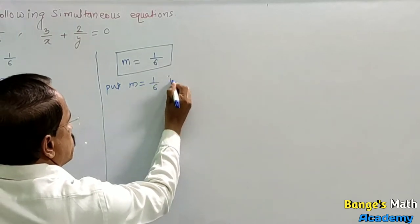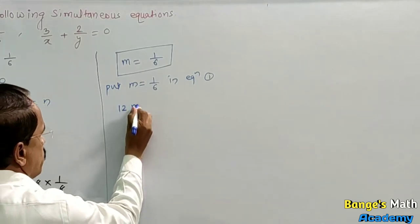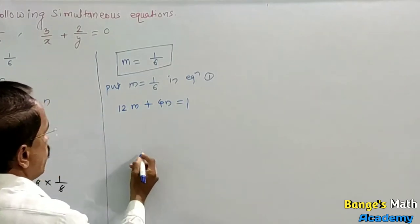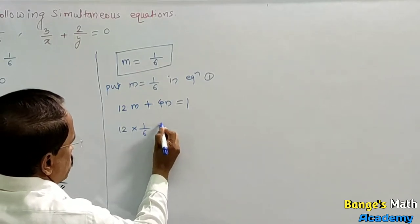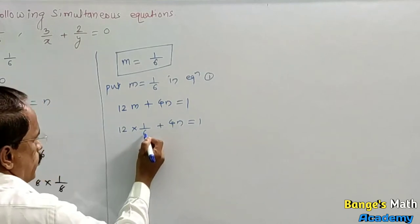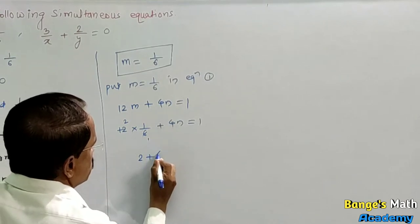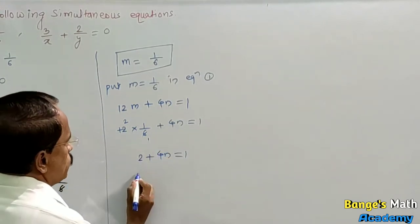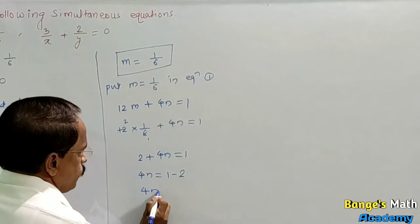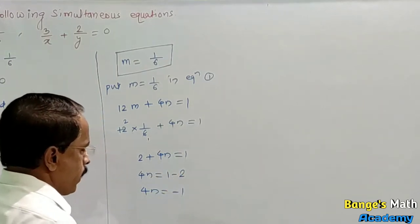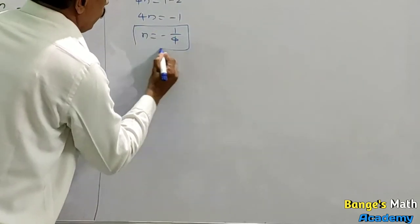Put m equal to 1 upon 6 in equation 1: 12 into 1 upon 6 plus 4n equals 1. Cancelling, 2 plus 4n equals 1. Transfer 2 to RHS: 4n equals 1 minus 2, which is minus 1. Transfer 4 to RHS: n equals minus 1 upon 4.